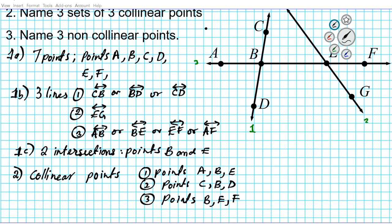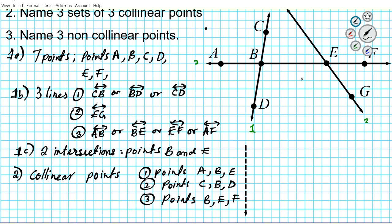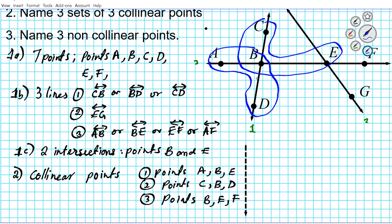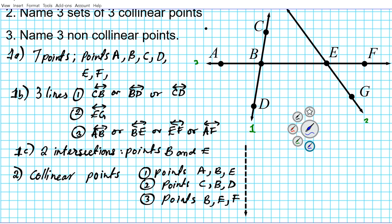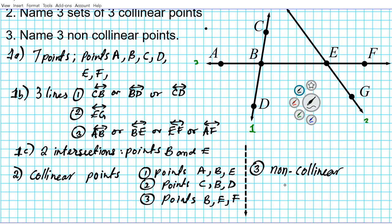For question number three, we need to name three non-collinear points — meaning three points that do not all fall on the same line. For example, C, B, E are non-collinear because they do not fall on the same line. Or A, B, D — non-collinear. Or E, F, G. Any group of points that do not lie on the same line are non-collinear points. Let's name one example: non-collinear points A, B, D.